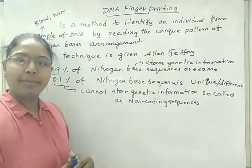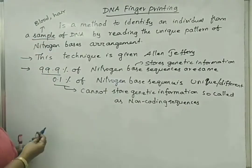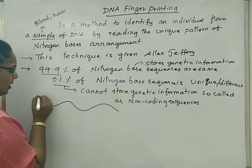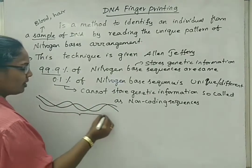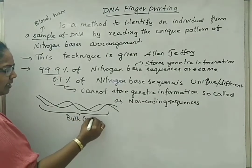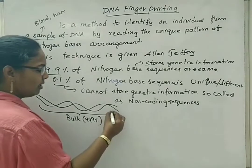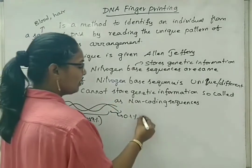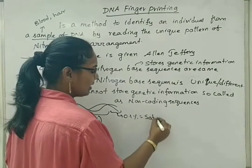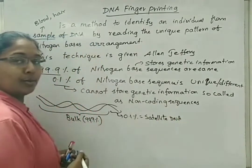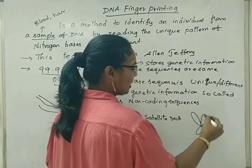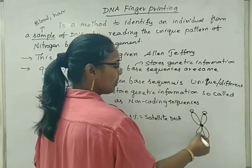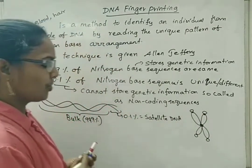When DNA is separated based on density gradient, we have seen DNA has two different strands. The DNA molecule — most of it, 99.9% — is bulk and has genetic material. A little bit is considered non-coding sequences, that is 0.1% of nitrogen bases. This 0.1% we give the term satellite DNA. We also study the satellite chromosome when reading about chromosomes — there is a primary constriction, a secondary constriction, and a little extra chromosomal part called the satellite part of the chromosome.